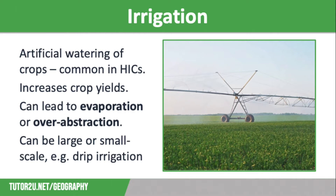The first strategy is irrigation — the artificial watering of crops to maintain production when the water supply is low or unreliable, taking water from rivers, lakes or reservoirs. Large-scale irrigation is widely used across HICs and in parts of Asia where monsoon rains recharge water supplies. However, it is not used as much across most LICs as the technology needed is expensive.